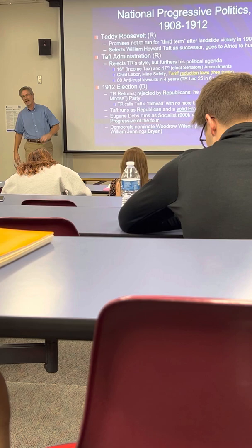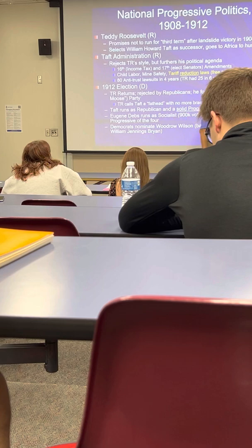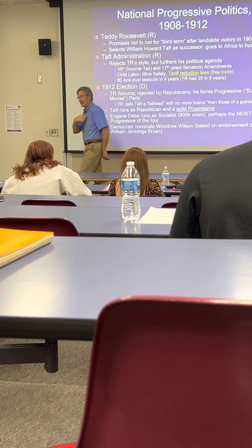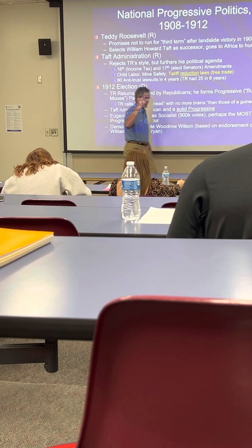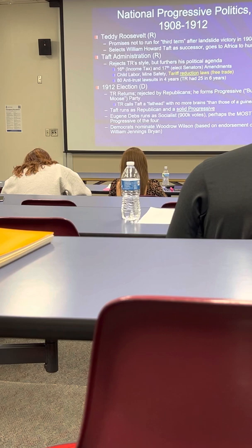Roosevelt forms his own progressive party — the Bull Moose Party. While announcing its formation in Milwaukee, he's shot by a would-be assassin. The bullet goes through his speech in his pocket, piercing his body but not going further. He gives the speech anyway, standing there with a bullet cooling in his chest — classic Teddy Roosevelt. What it does is clearly split the Republican Party, and you cannot win an election when you've split your party. The two-party system doesn't work that way.